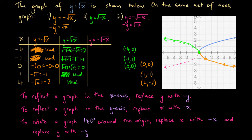Let's confirm the final pink graph. At x equals minus 4: y equals minus the square root of minus (minus 4). A negative times a negative is positive, so this becomes negative square root of 4, which equals negative 2. So at x equals negative 4, y equals negative 2.